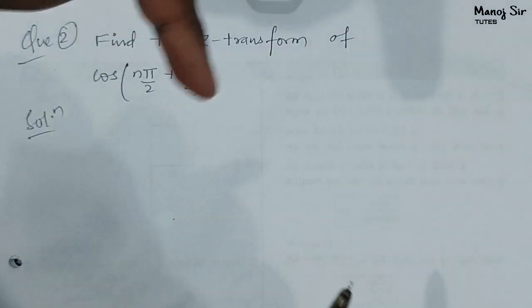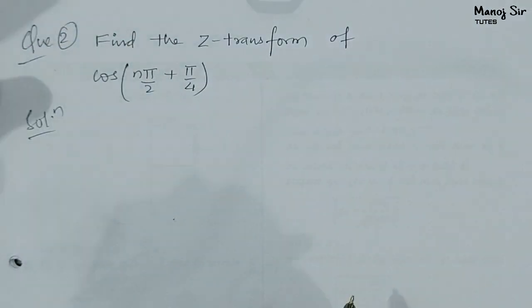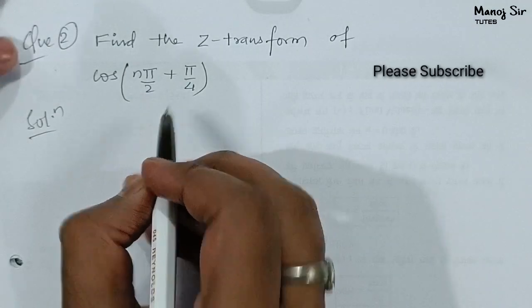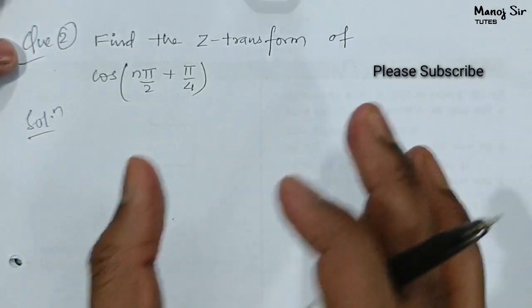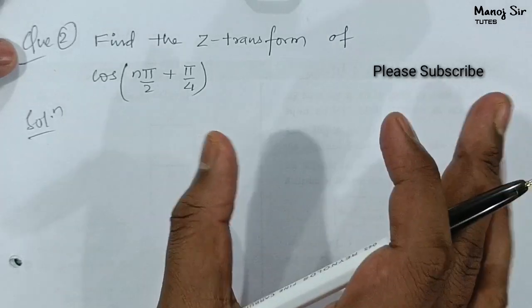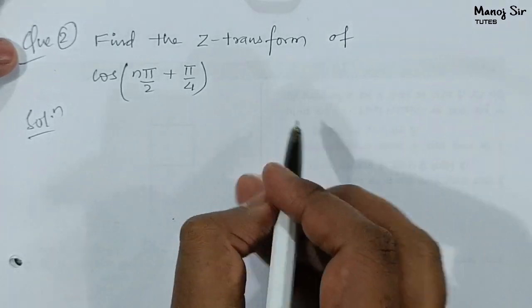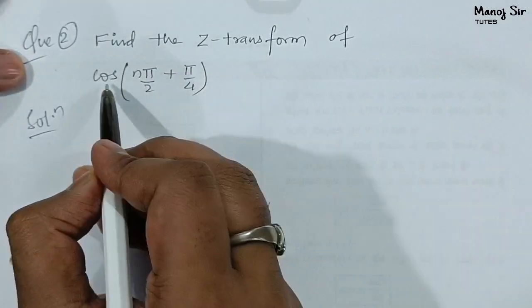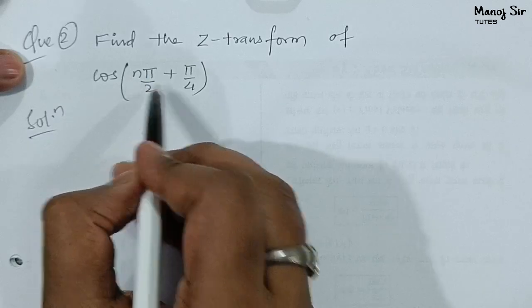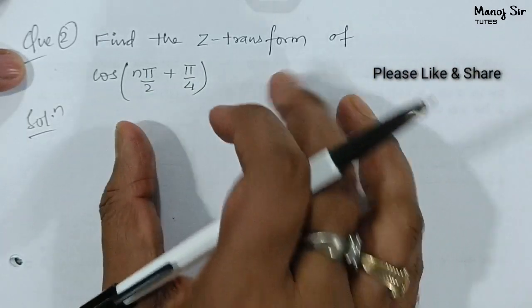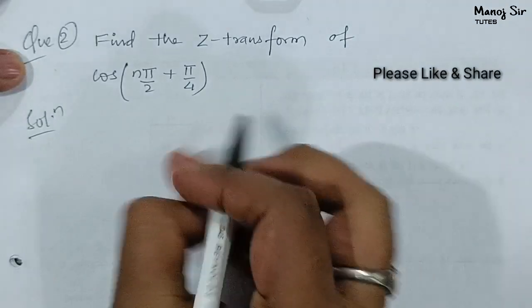In the info button and in the description box below you will get the complete playlist of Z transform. Welcome to video number 6. In this video we are going to solve a very important problem on the topic of Z transform. The problem is: find the Z transform of cos(nπ/2 + π/4). This problem is very important.